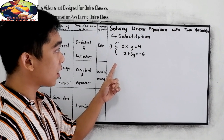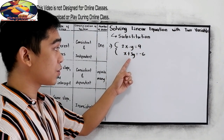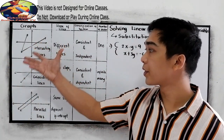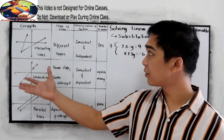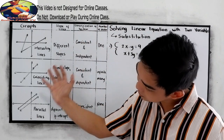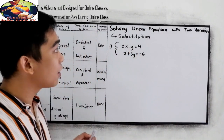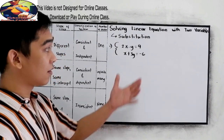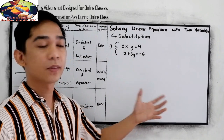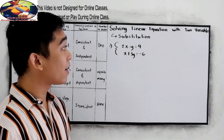The given equations are 2x minus y is equal to 9, and x plus 3y is equal to negative 6. Notice on our board, we have here the graph, the slope of the line, classification, and the number of solutions. We will be needing this table and graph later. So aside from solving for x and y using substitution, we can also graph this problem. Now let's try this example, solved by substitution method.